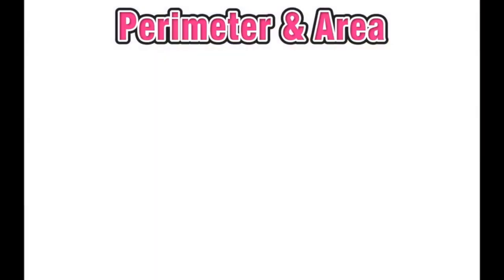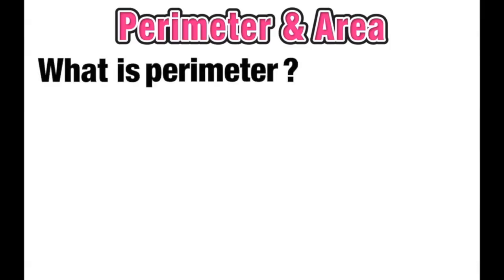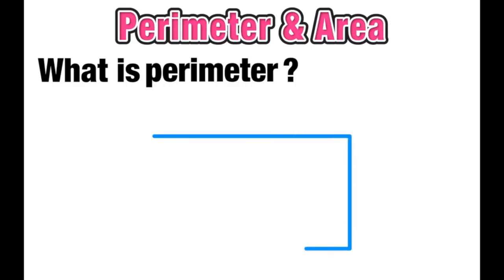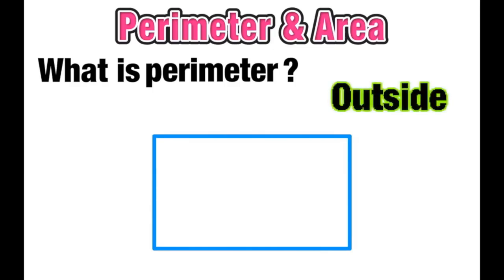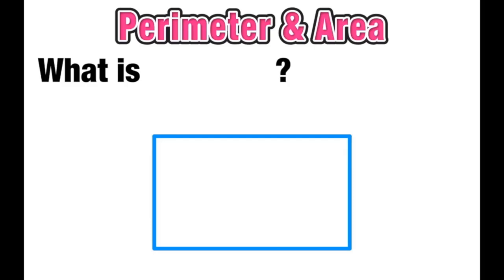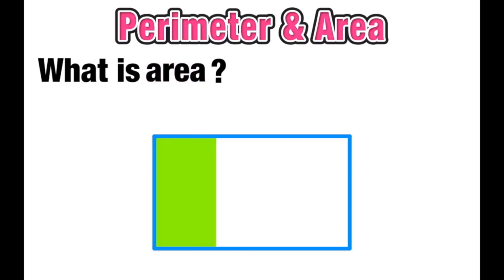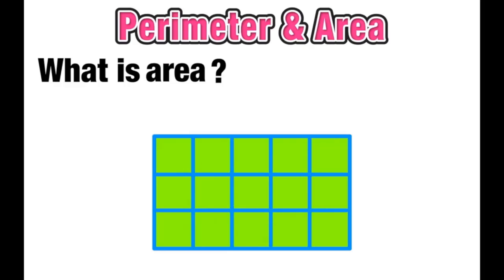Welcome to this special lesson on finding perimeter and area in rectangular figures. We'll start by asking: what is perimeter? For rectangles, we can think of perimeter as measuring the length along the entire outside of the figure. And since perimeter is the outside length, area is going to be all the space covered inside the figure. We measure area in square units.